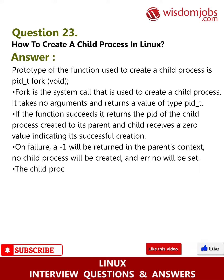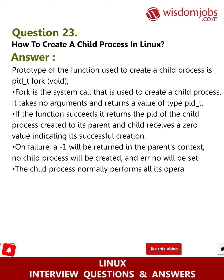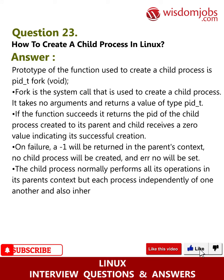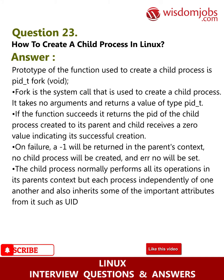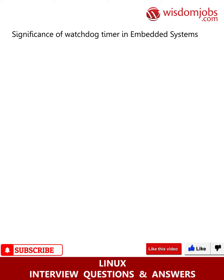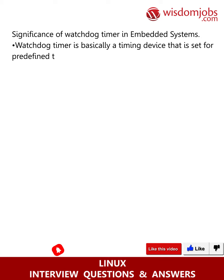On failure, a minus one will be returned in the parent's context, no child process will be created, and errno will be set. The child process normally performs all its operations in the parent's context but each process runs independently of one another. The child also inherits important attributes from the parent such as current directory, root directory, and so on.